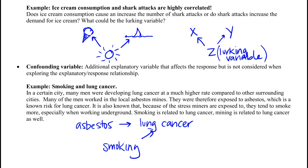Maybe working in the asbestos mine increases your risk of lung cancer by 50%, whereas smoking increases it by 60%. We would want to parse out what was due to each of the two explanatory variables, which means we need to measure both of them. In terms of X and Y, the direct relationship does exist in a confounding variable — there's just an additional variable also adding to our outcome. That's the big difference: the additional explanatory variable in confounding versus the common outcomes we see in a lurking variable.